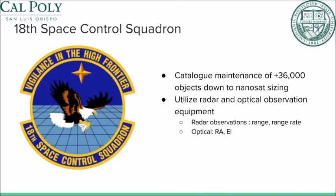The primary entity with the purpose of satellite tracking is the United States Air Force. Specifically, the 18th Space Control Squadron tracks over 36,000 objects in orbit, ranging from large geosatellites down to orbital debris only a few centimeters in diameter. The squadron uses both radar as well as optical observation stations to provide data for orbit determination.